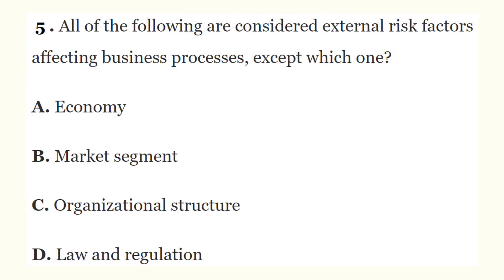Question 5: All of the following are considered external risk factors affecting business processes except for which one? The correct answer is C — organizational structure. Organizational structure would be considered an internal risk factor affecting business processes, not an external one.